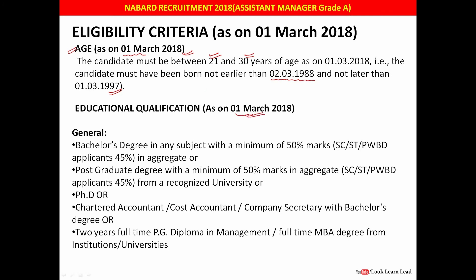Educational qualifications are also assessed as on 1st March 2018. For the Generalist post, a Bachelor's degree in any subject with a minimum of 50% marks for General/OBC candidates, or 45% for SC/ST and PWD candidates is required. Alternatively, a Post Graduate degree with a minimum of 50% for General/OBC or 45% for reserved candidates is acceptable. A PhD holders have no percentage criteria. Chartered Accountant, Cost Accountant, or Company Secretary with a Bachelor's degree are also eligible.